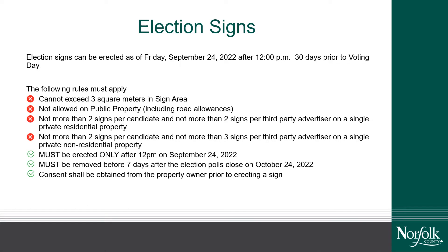You must be a registered candidate before erecting an election sign. Your election sign can be erected as of Friday, September 24th at 12pm and must be removed seven days after the election. You are not permitted to erect any signs on any premises used as a polling place or on county property. This means the entire property, including the parking lot, adjoining fences, adjacent sidewalks, and any abutting road allowances are considered part of these polling places. Do not place any signs in public parks or on any property owned by Norfolk County.